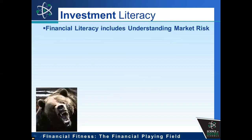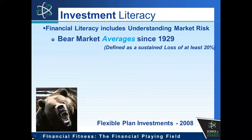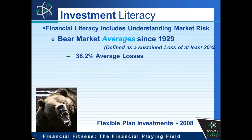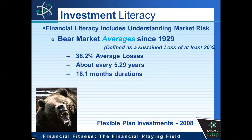It is essential to understand risks such as bear markets. This chart's information was developed by Flexible Plan Investments. A bear market is considered to be a sustained loss of at least 20%. They found the following patterns between 1929 and 2008: the average loss was 38.2%, bear markets happened about every five and a quarter to five and a third years, and bear markets last for about a year and a half.